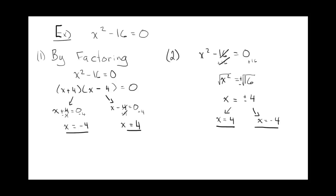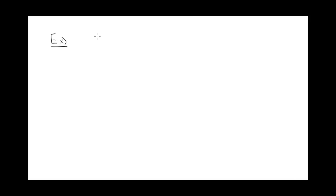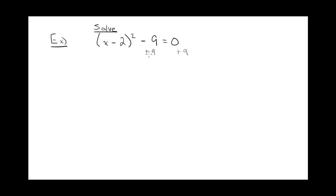This is the most straightforward example, which you could do either way — by factoring or by isolating. Another example, a little more difficult, is when the equation is in vertex form, and you want to solve. This one is not in standard form, so you're probably not thinking you're going to factor. The best way to do this one is to isolate. The thing you have to deal with first is the negative 9, so we'll add 9 to both sides.